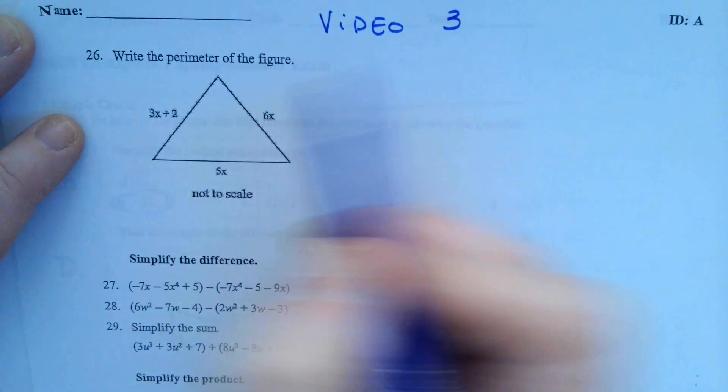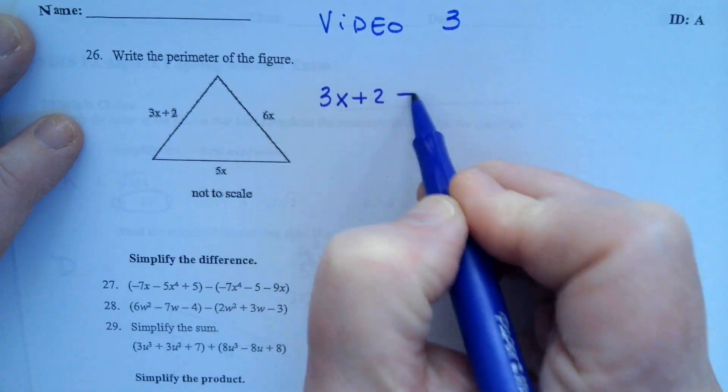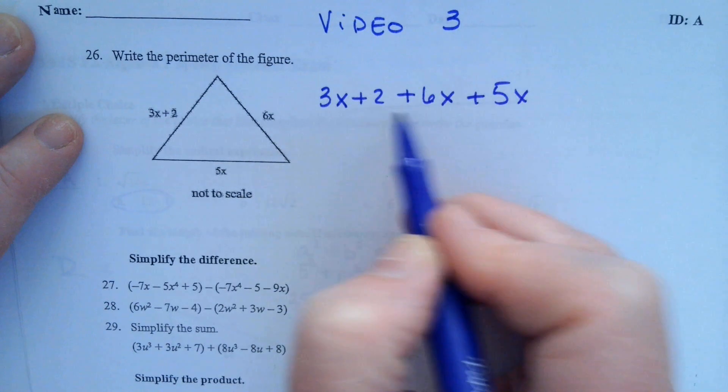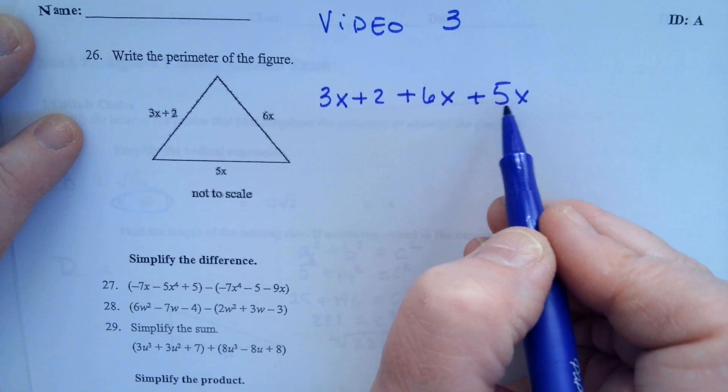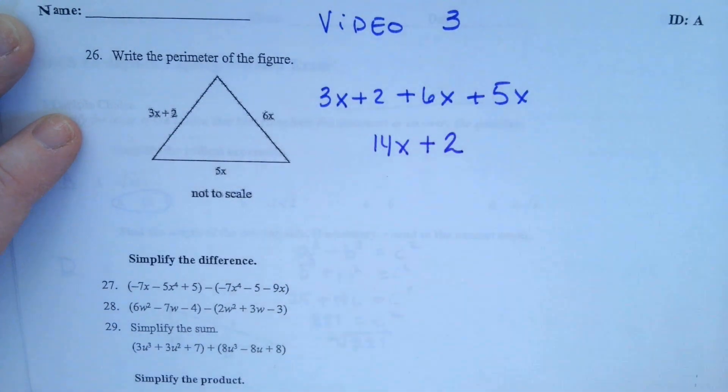Find the perimeter of the figure. We need to add up those sides. So 3x plus 2 plus 6x plus 5x. We add those together. 3 and 6 make 9, 9 and 5 make 14. So this is 14x plus 2.